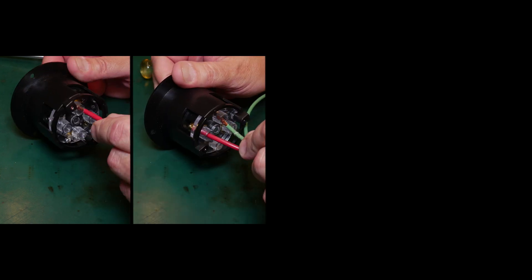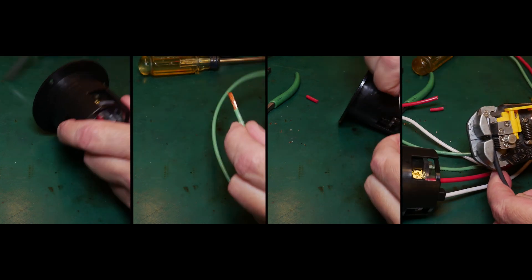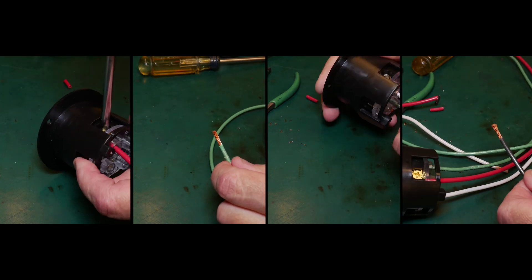Wiring the connector is fairly straightforward. The ground, neutral, and hot screws all color-coded with green for ground, white for neutral, and brass for the hot lines.